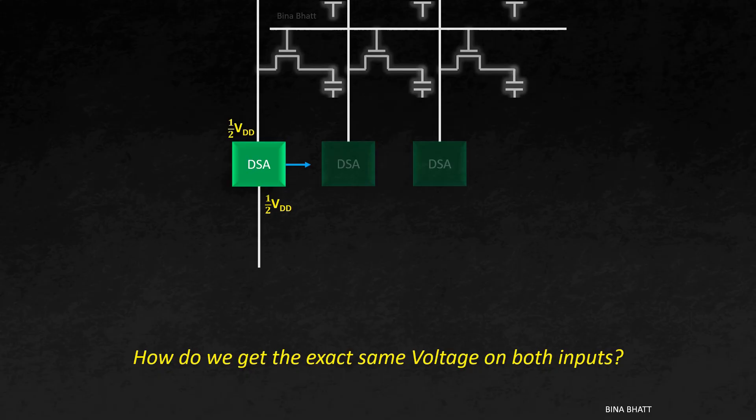But do you know how do we get the exact same voltage that is VDD by 2 on both the inputs? How is this practically made possible? For that we use a pre-charge and equalizer circuit. And this circuit is also present towards the end of the bitline. I'll call this the PNE circuit.